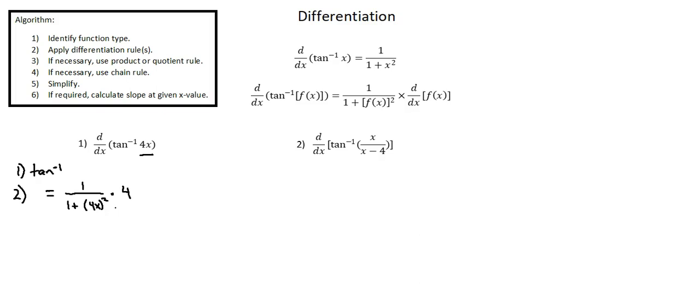Step 3, if necessary use product or quotient rule. We don't need either of those rules in this example. Step 4, if necessary use chain rule. The chain rule does apply in this case. We're using the chain rule in selecting the second differentiation rule for inverse tangent.